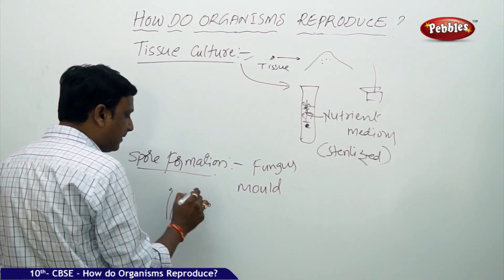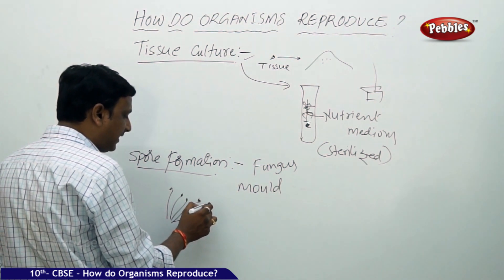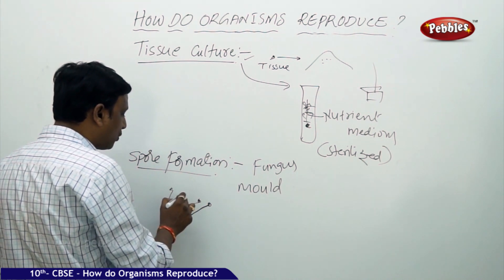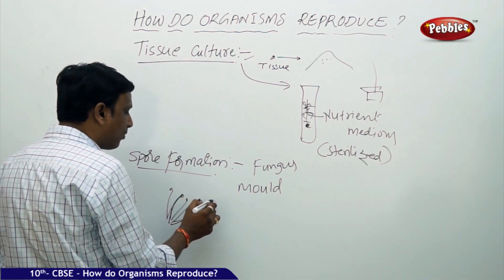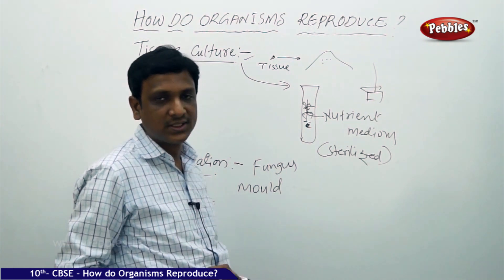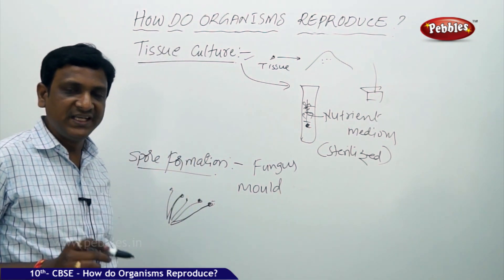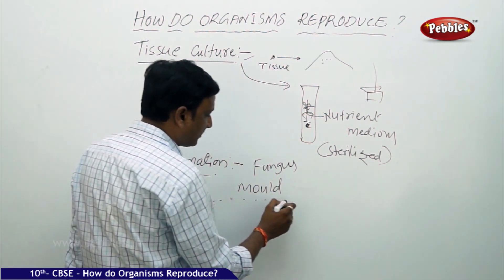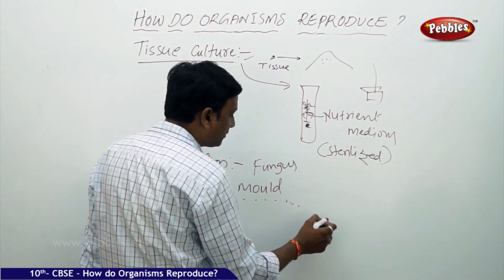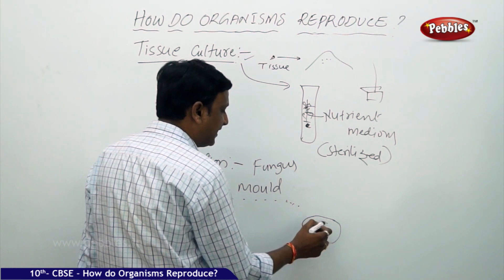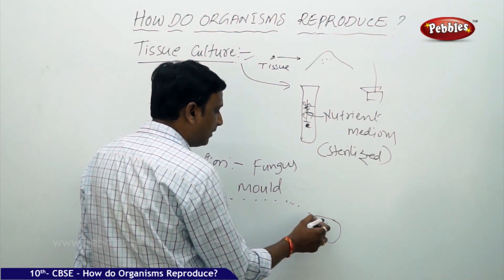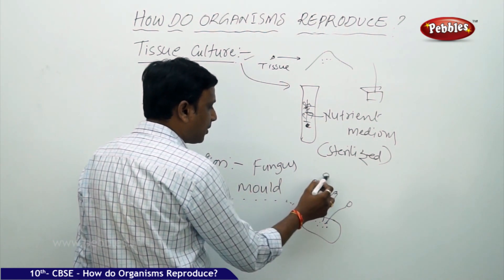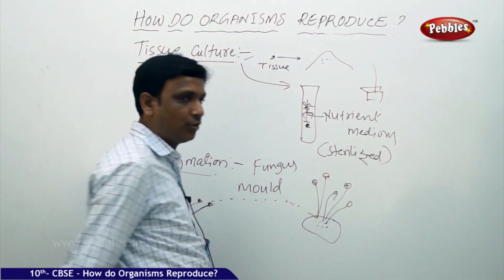If you observe the hair-like structure, it has a long stalk-like body with a head on top. The head contains small dot-like structures called spores. These spores are just like seeds of a plant. If the spores are transferred by air or any other means to some other food material or place where nutrients are available, these spores will germinate. This kind of reproduction is called spore formation or sporulation.